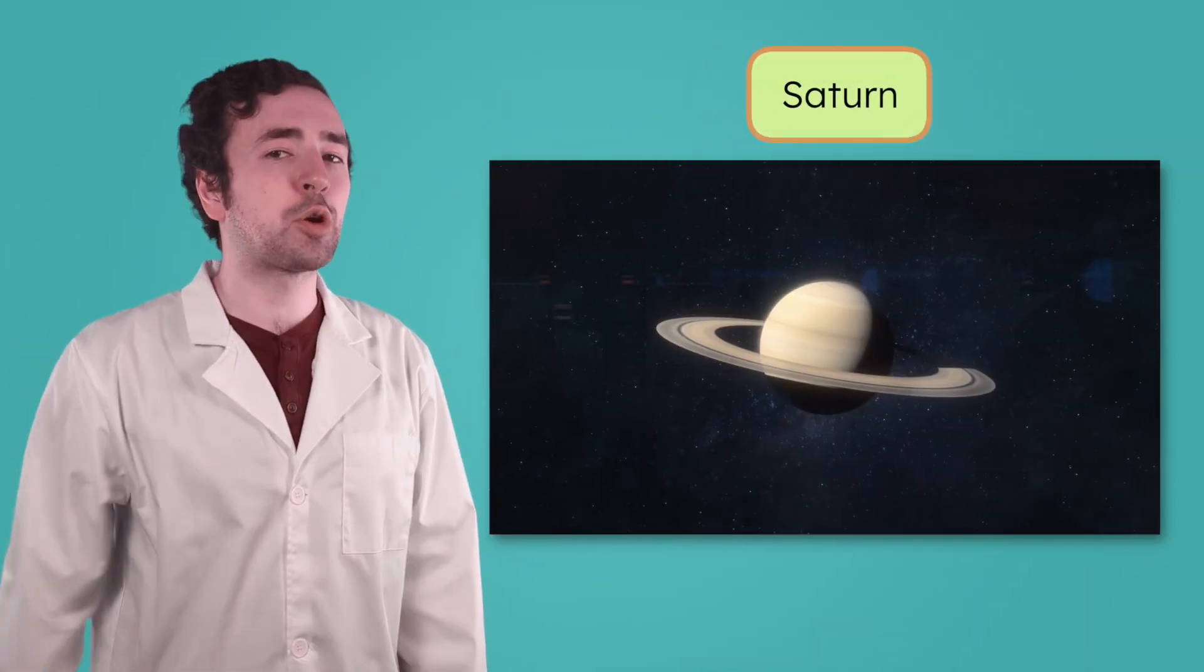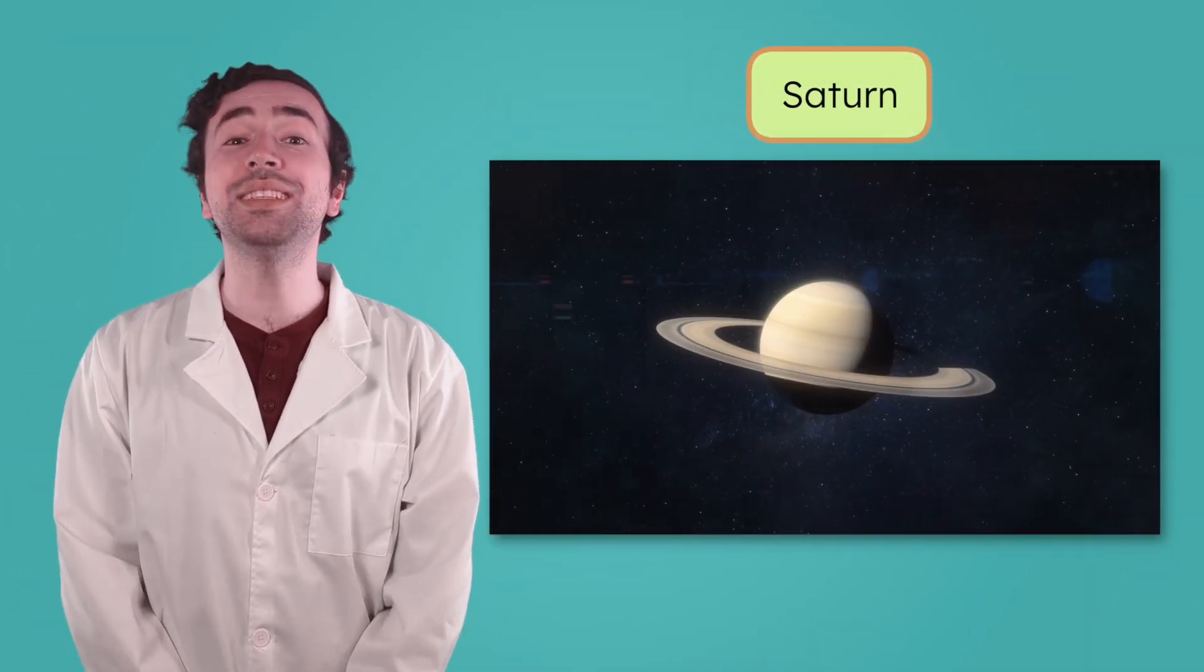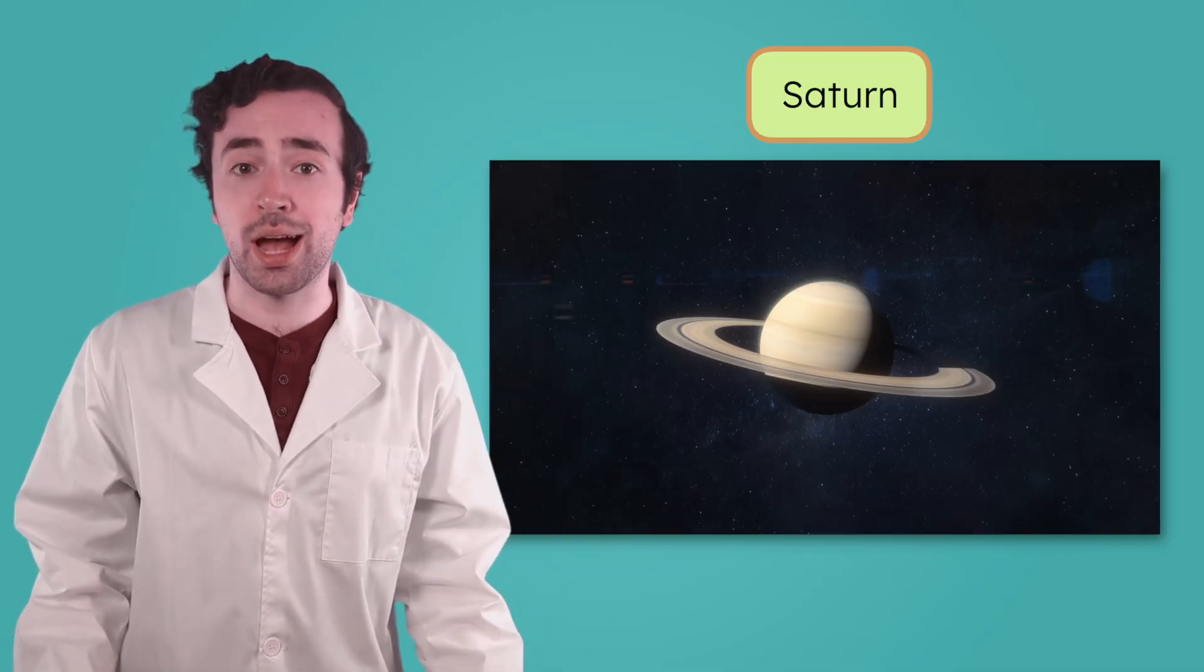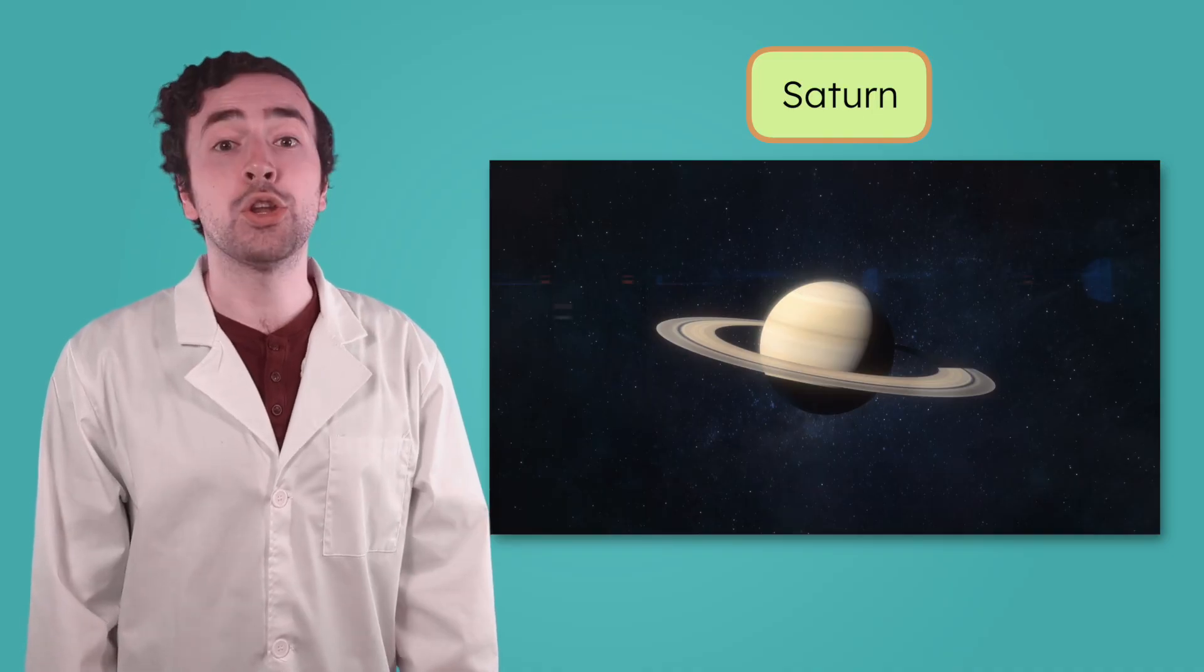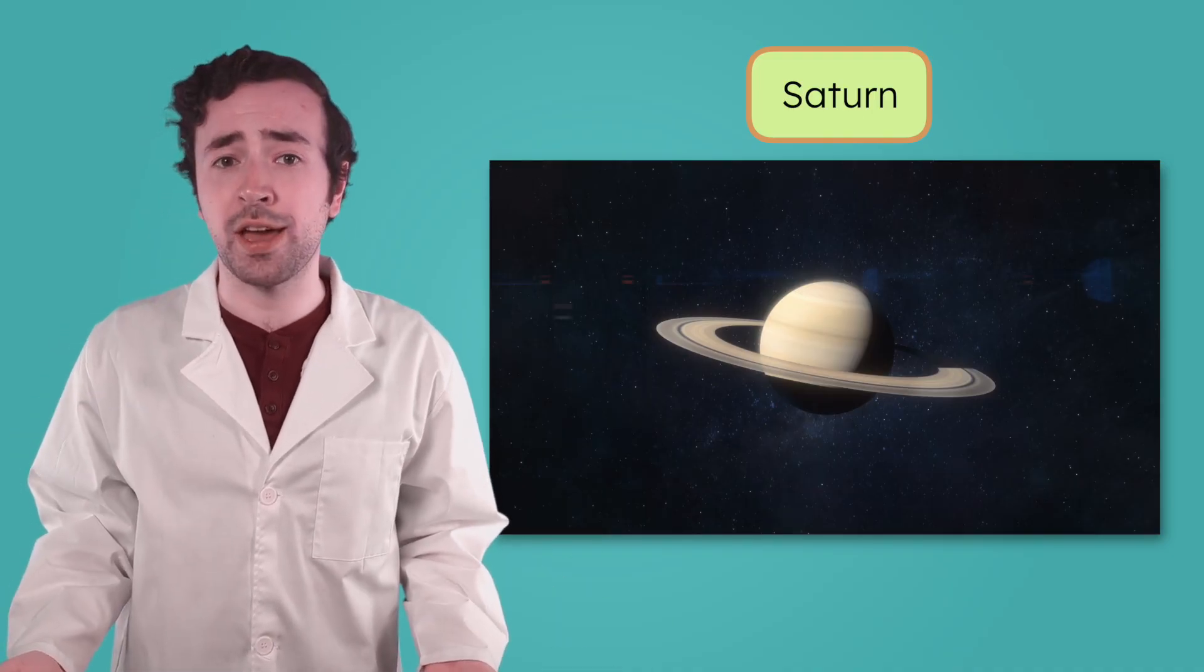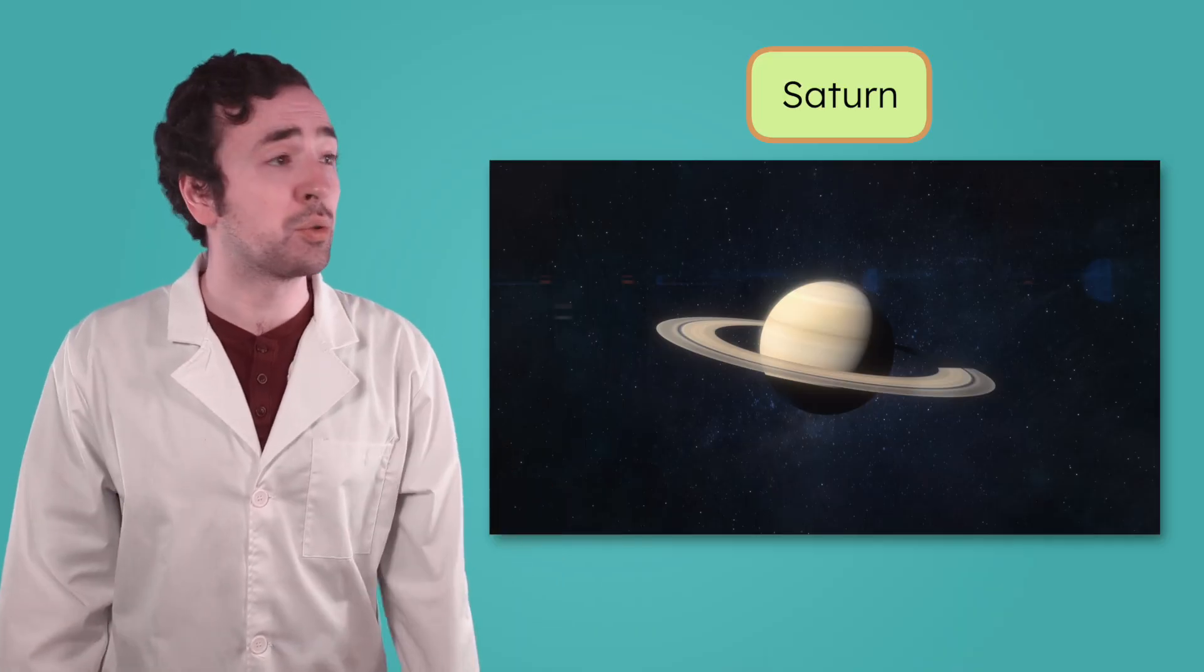The next outer planet is Saturn, the second largest in the solar system. Like Jupiter, Saturn is a gas giant. Which means, yep, no solid surface here either. But that's not Saturn's claim to fame. What's the first thing you notice when you look at this planet?